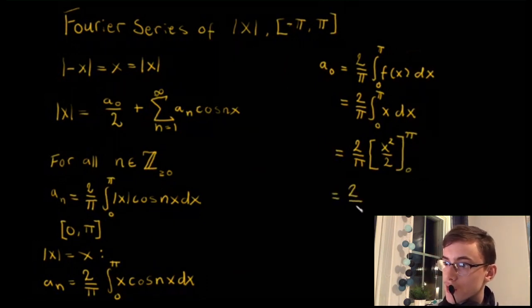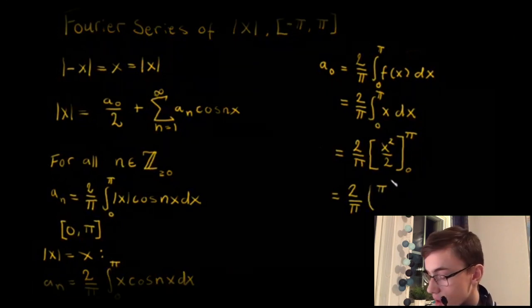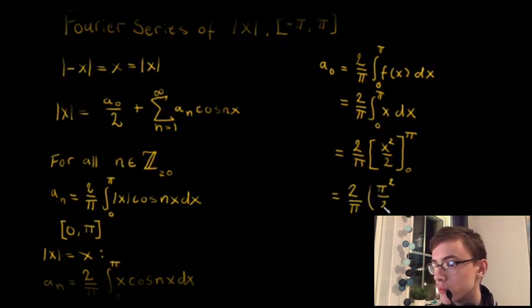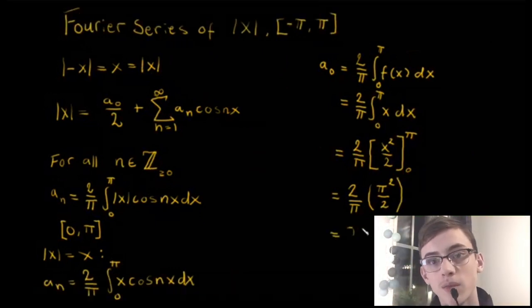Plugging 0 in gives 0, so this becomes 2/π times π²/2, which simplifies to just π.